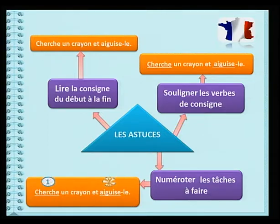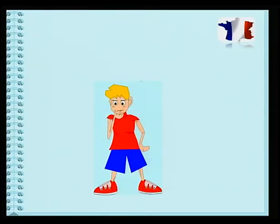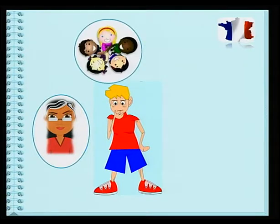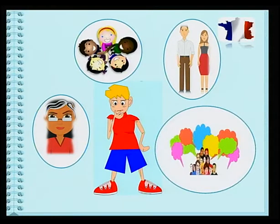Donc, que devras-tu faire comme tâche en premier? Cherche. En deuxième, aiguise. Alors, en bref, que dois-tu faire? Tu dois premièrement chercher un crayon. Puis, tu prends un aiguisoire pour aiguiser le crayon. Mais lire une consigne du début à la fin demande un peu d'effort. Alors, n'hésite pas à demander de l'aide pour pouvoir lire les consignes. Ton enseignant, tes amis, tes parents et autres personnes sont là pour t'aider.